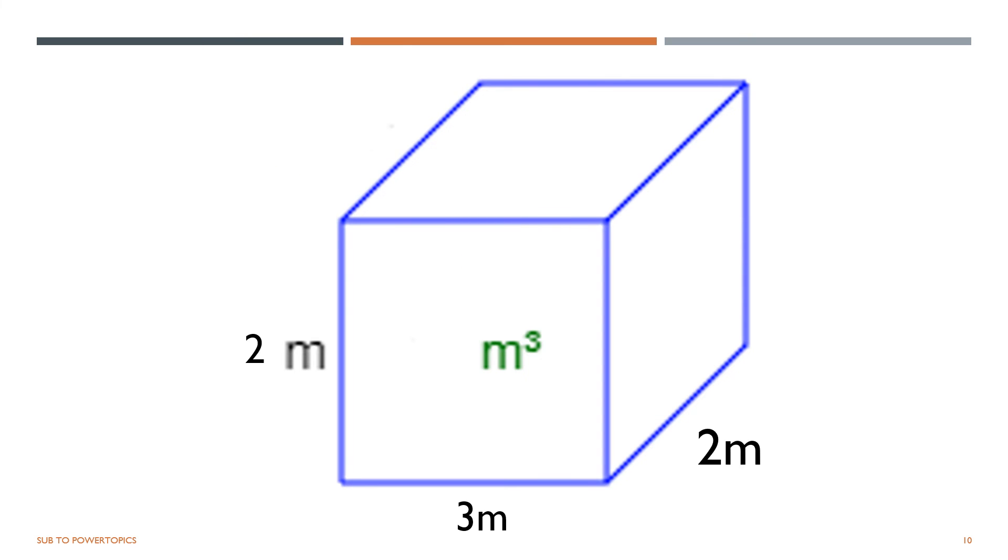For the next question, we've got a different unit here, which is meter. So we must make sure that we give our answer in meters as well. So the length is 3 meters, the width is 2 meters. The width is 2 meters. Same goes to the height. So now we multiply them all, and we'll get 12 meter cube.